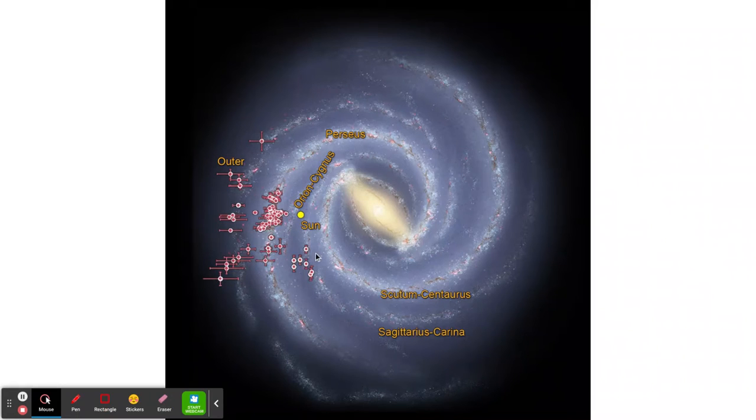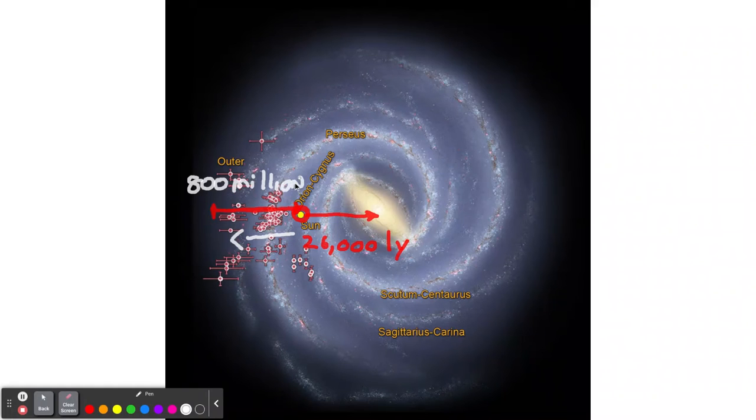For example, let's get a clean page here. By the way, here's another snapshot of our Milky Way. I'm going to get our pen going. So here's where we are, and from there to the center. By the way, there's a supermassive black hole in the center, Sagittarius A. So that's about 26,000 light years.